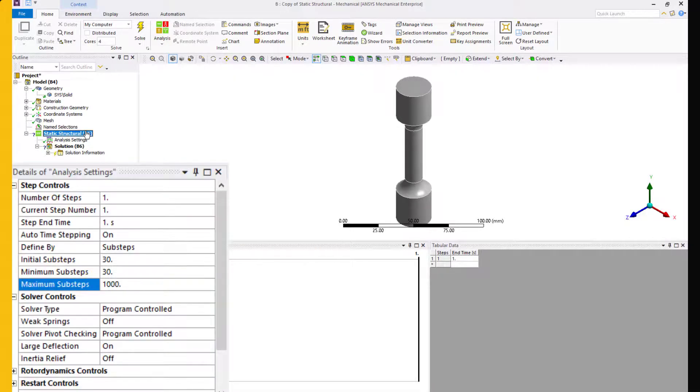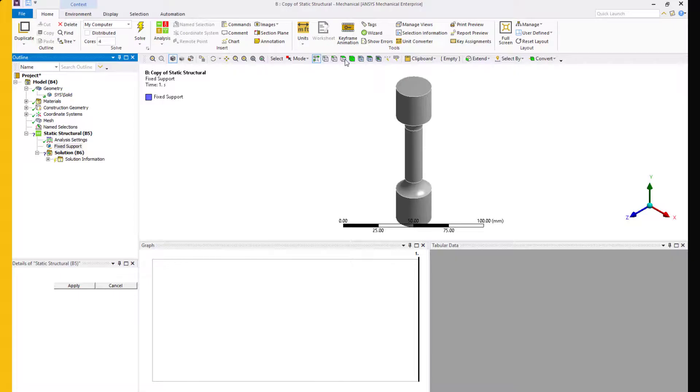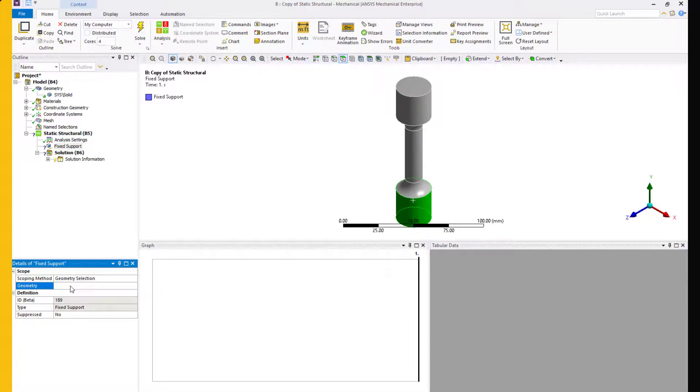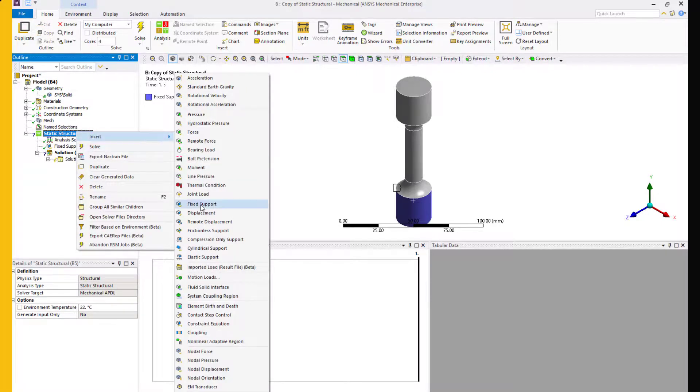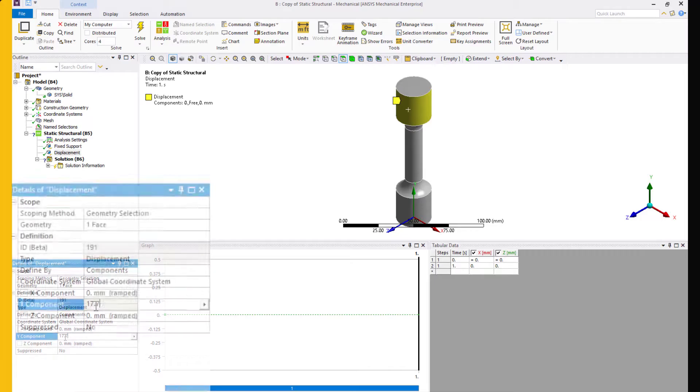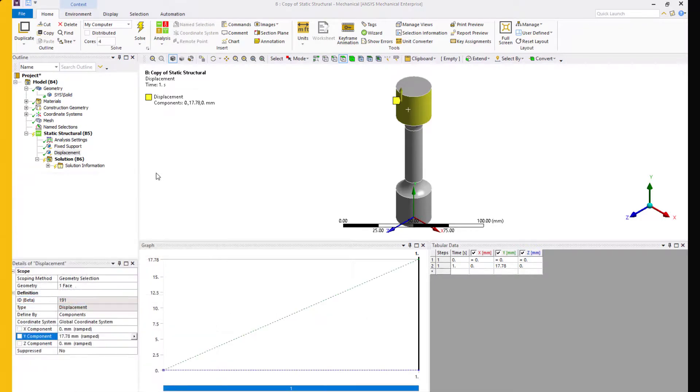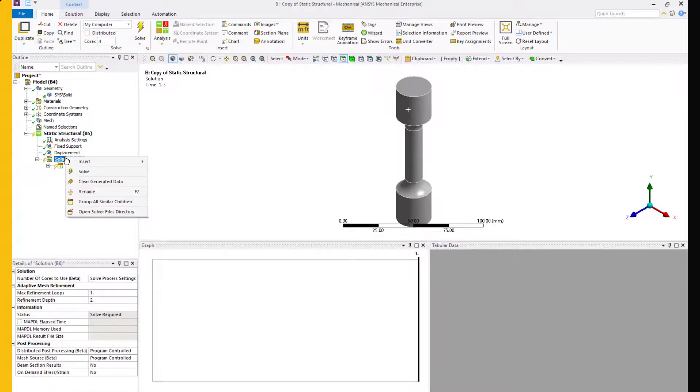Next, we will apply boundary conditions. On one end, the specimen is held at rest by the fixture, so a fixed support is applied. On the other end of the specimen, a displacement of 17.78 mm is applied. Now, the model is set for solution. Let's hit the Solve button.